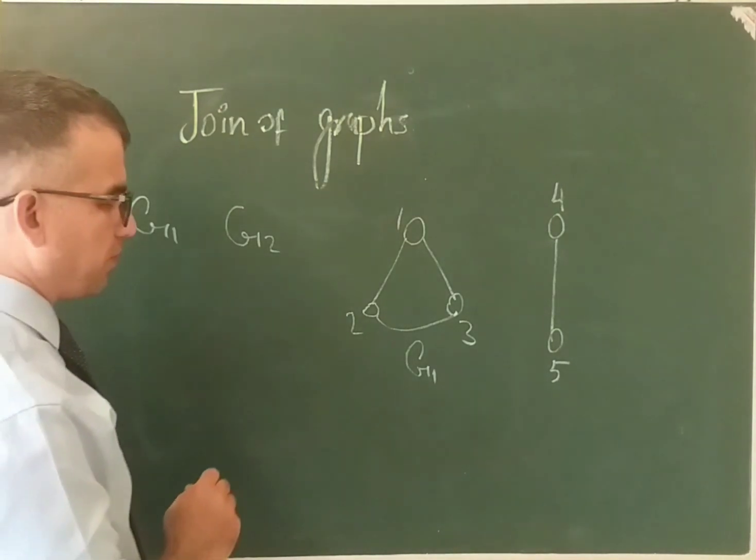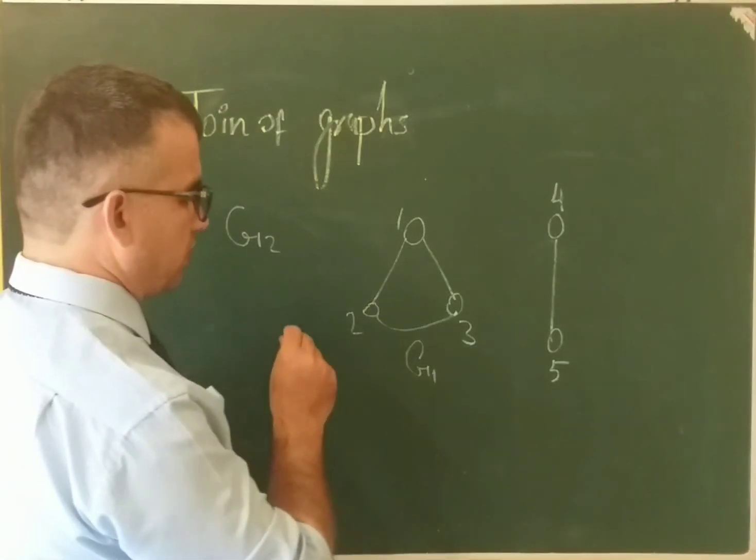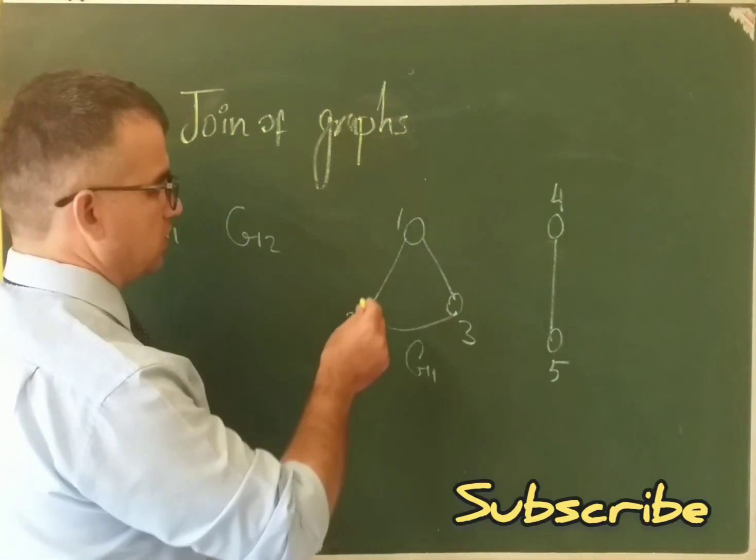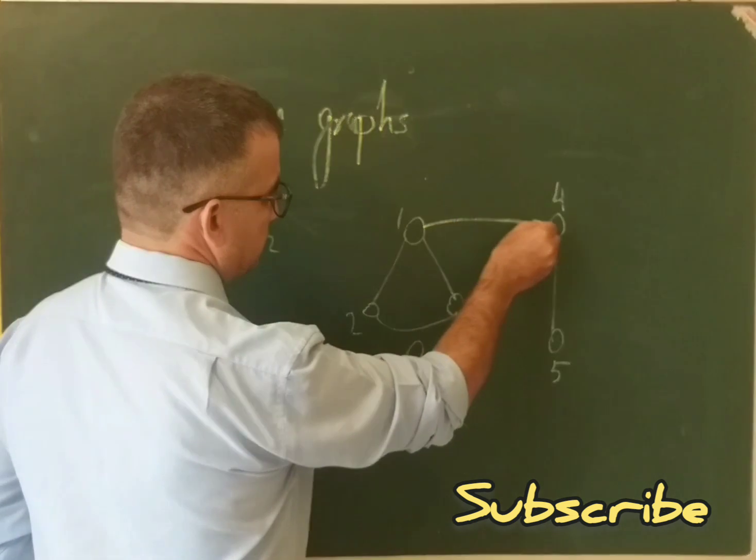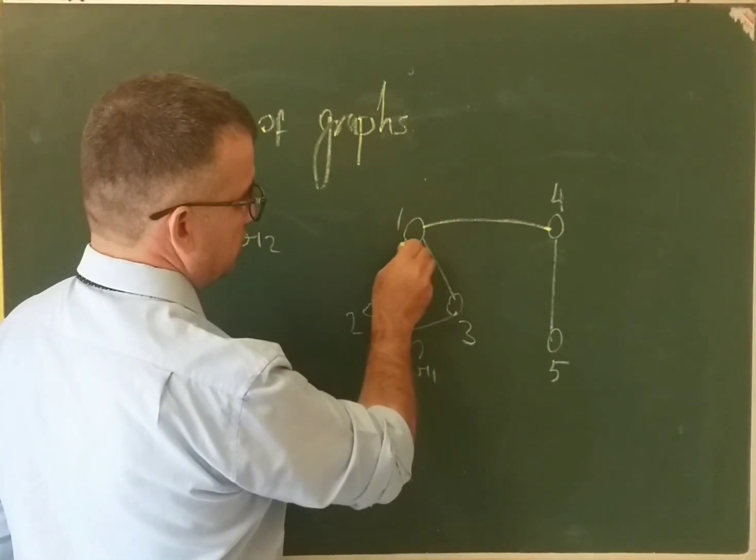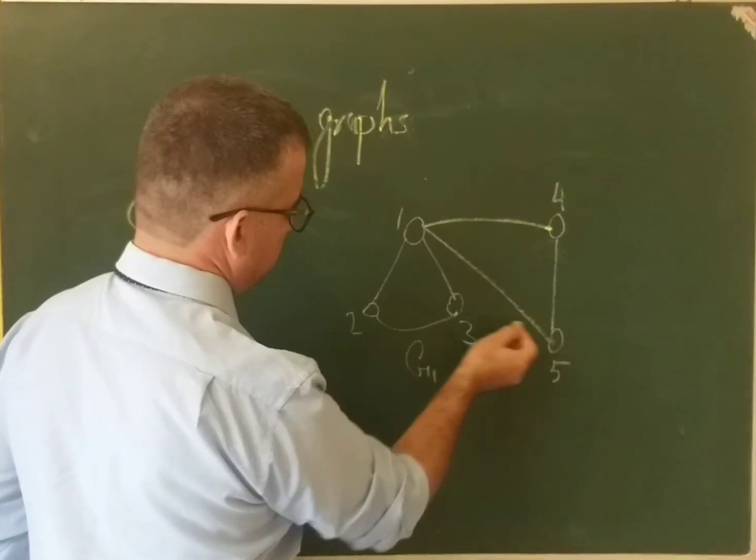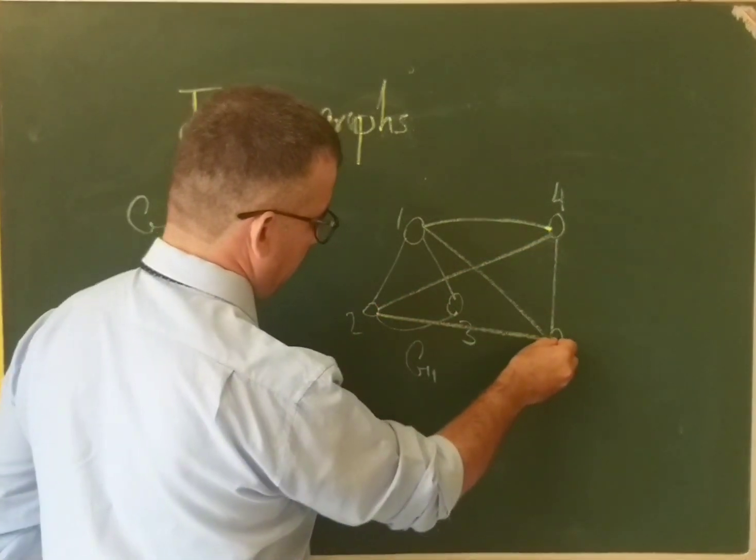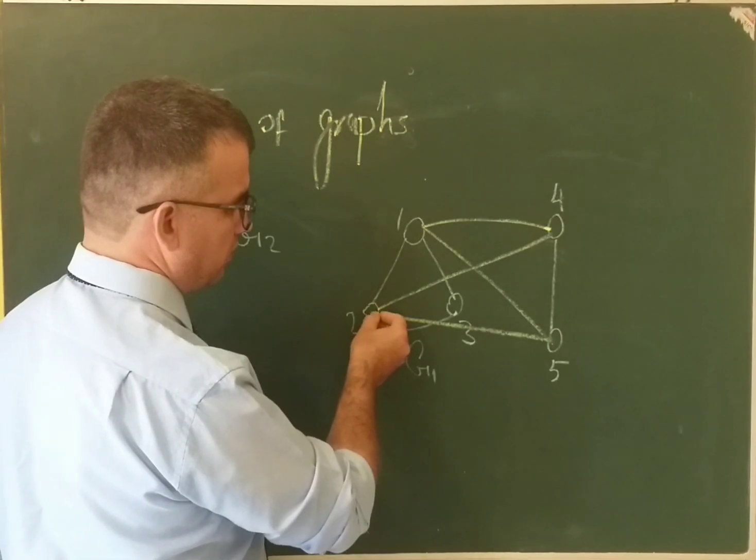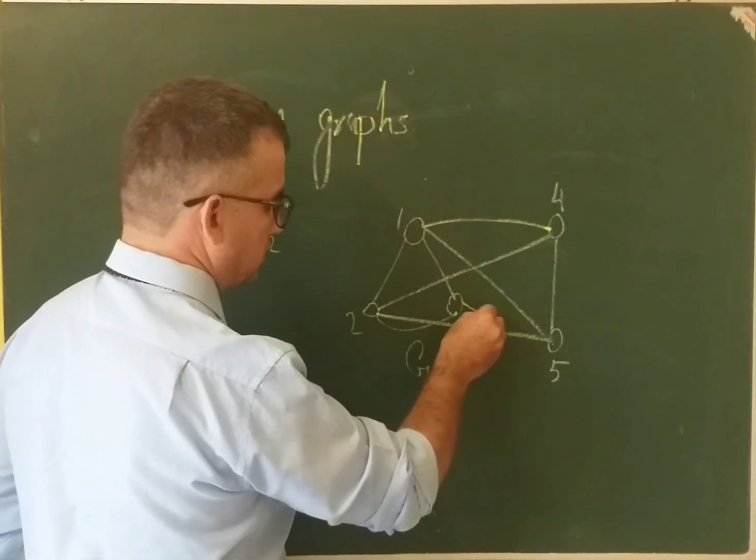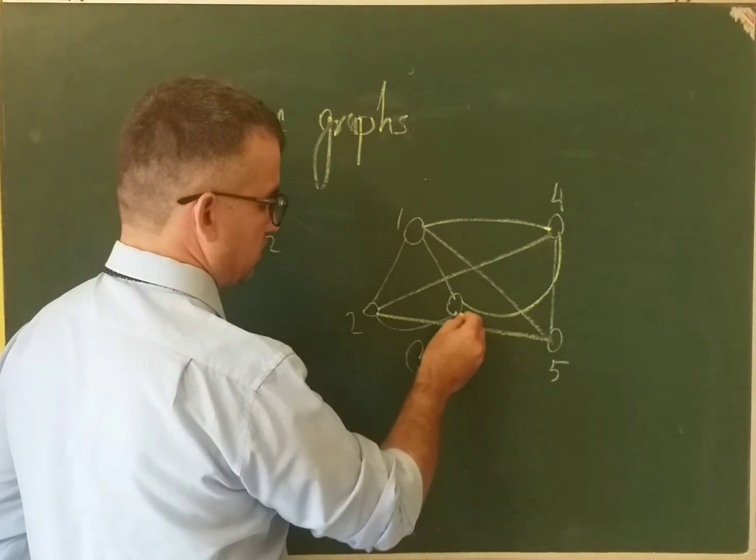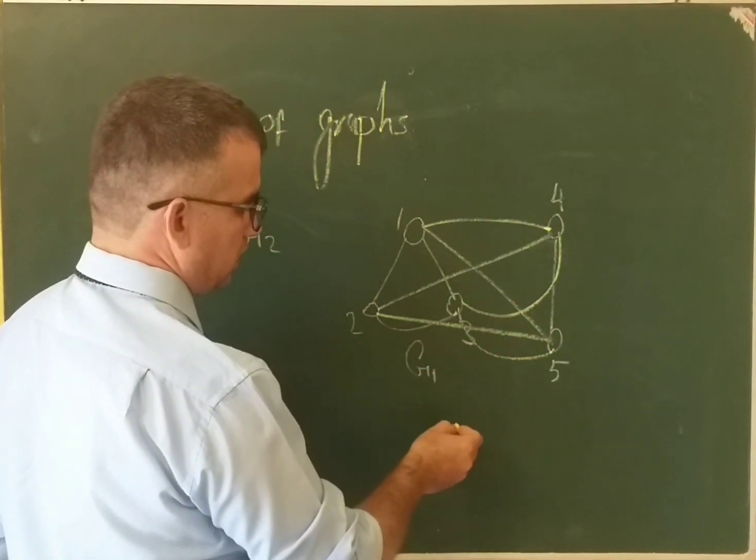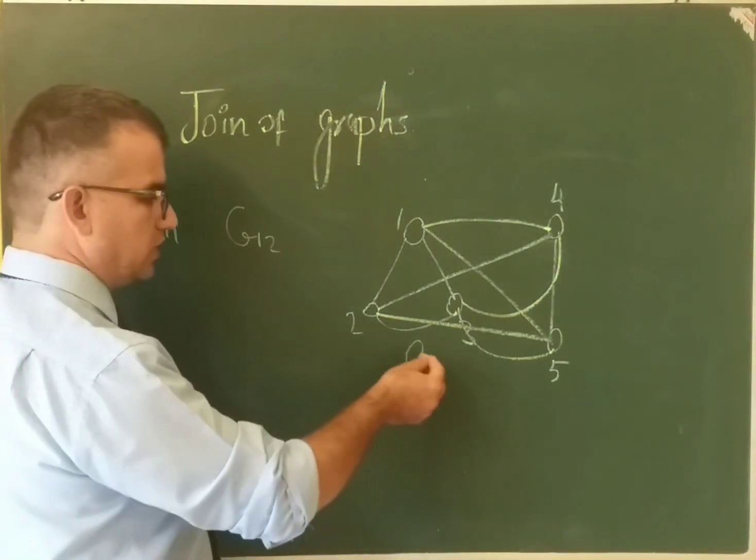Yes, every vertex of this graph I am joining to graph G2. This graph is the join graph of G1 to G2.